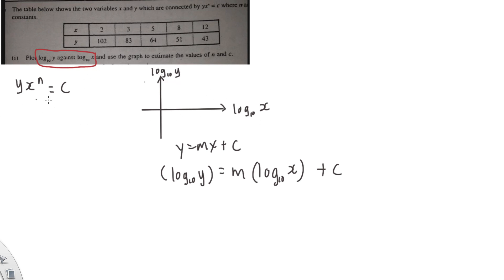So what I will do is the first step I add the log 10 for both sides. So I add log 10 for both sides. So you can see here it will become log 10 of y x power n equals to log 10 c. Alright,